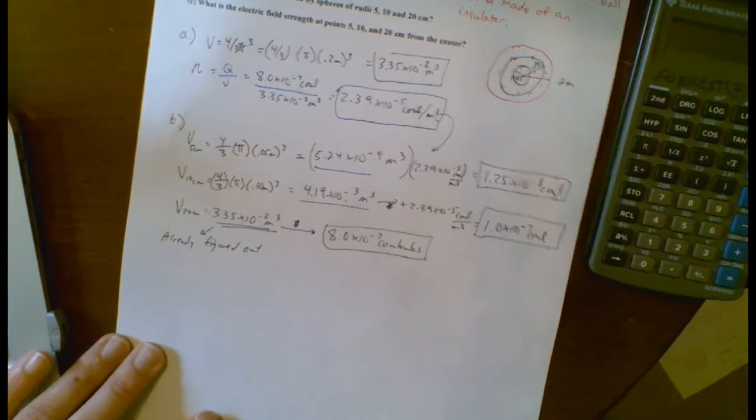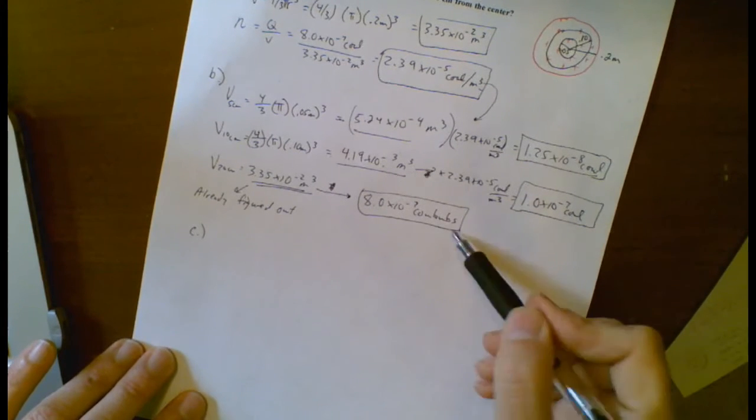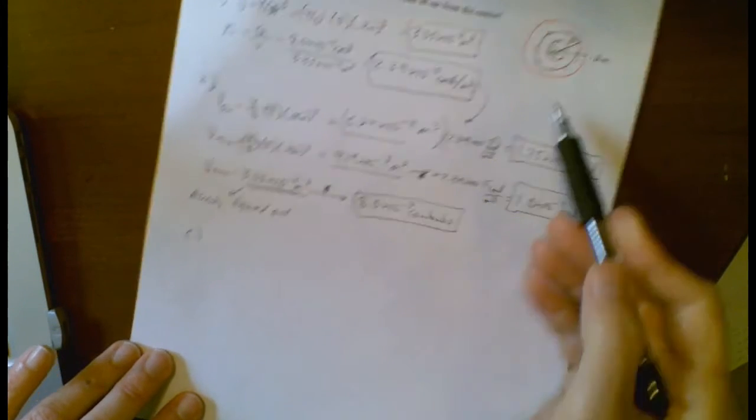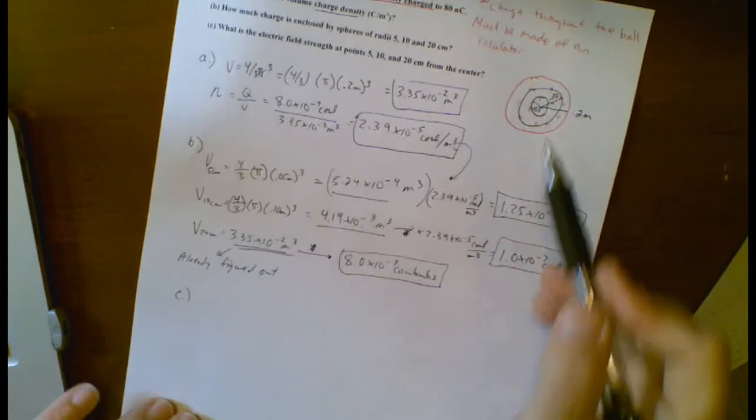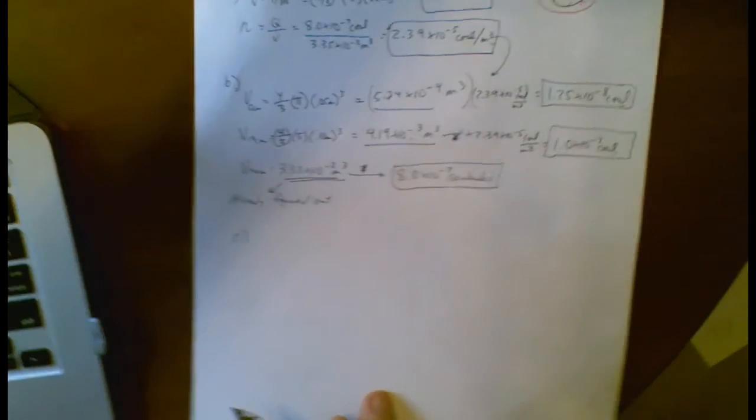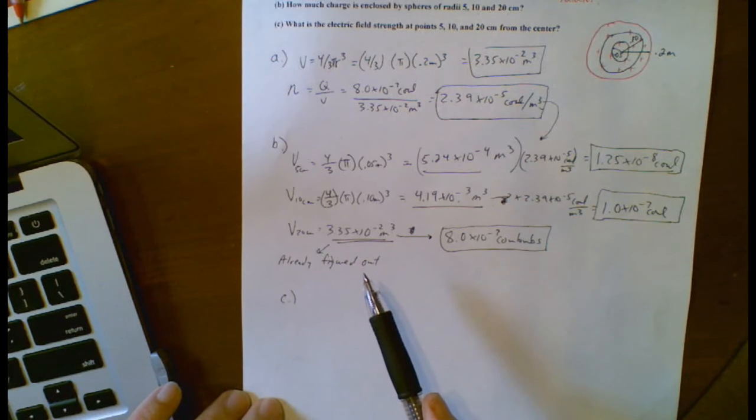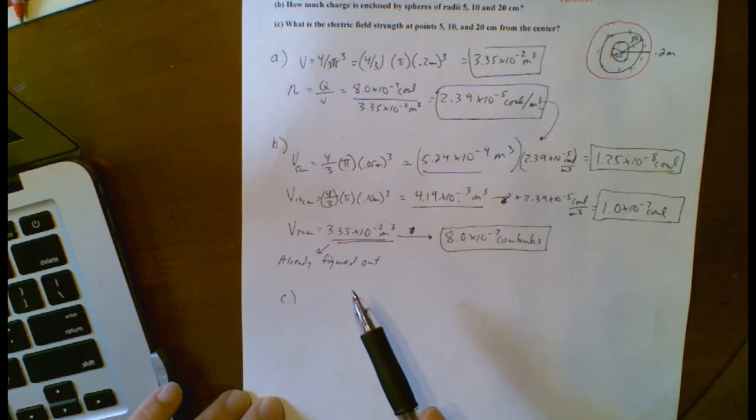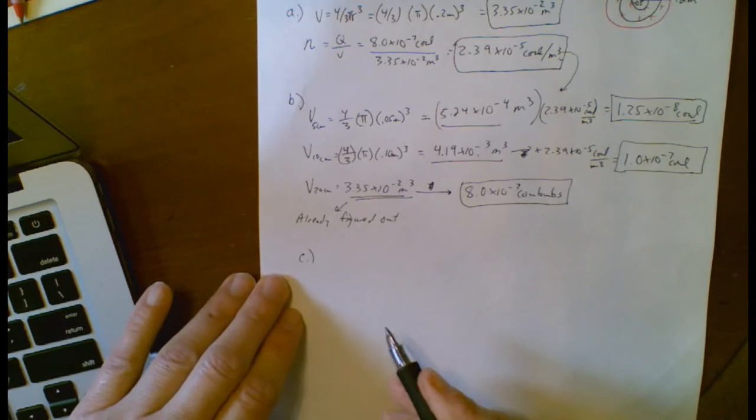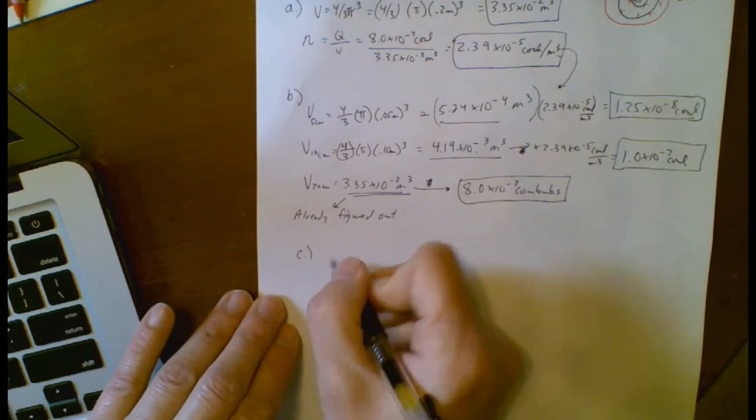So again, I could use proportions for a lot of that. The last part here is what's the electric field strength. Now the thing that's interesting about this is you might think that the electric field strength is getting stronger because you're holding so much more charge at each radius. Or you might think it's getting weaker because you're further from the center. So it's really a question of which of those is increasing more.